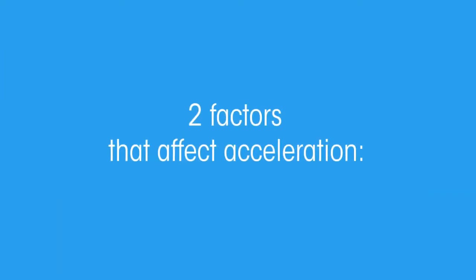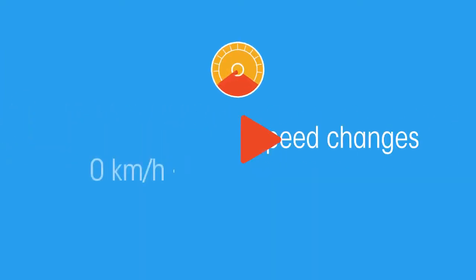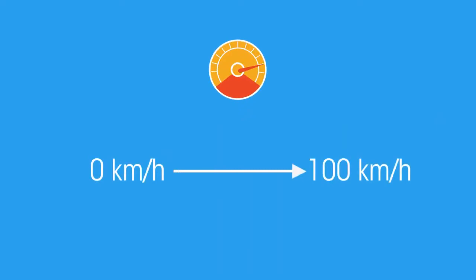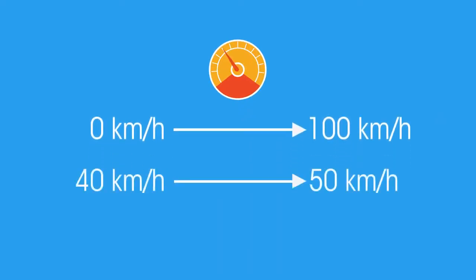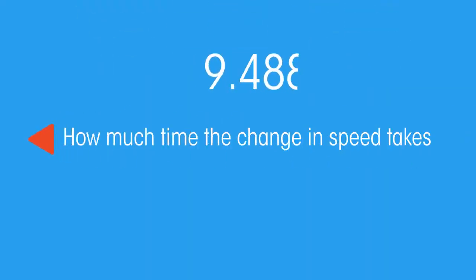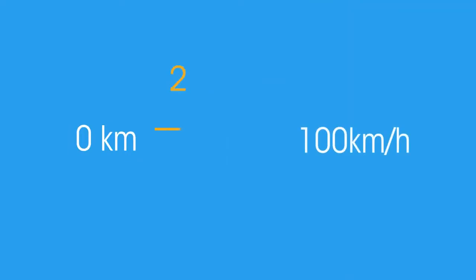There are two things that affect acceleration. Firstly, how much the speed changes. So is it from 0 to 100 km per hour, or is it only from 40 km per hour to 50 km per hour? And secondly, how much time the change in speed takes. So have you gone from 0 to 100 km per hour in 10 seconds or 20 seconds?